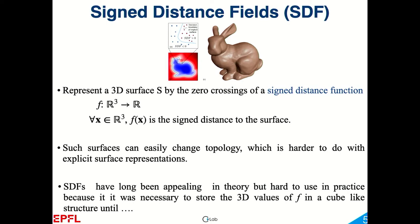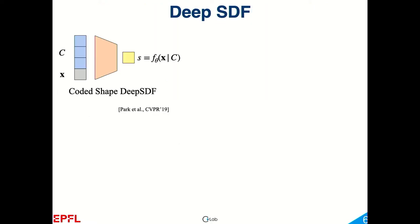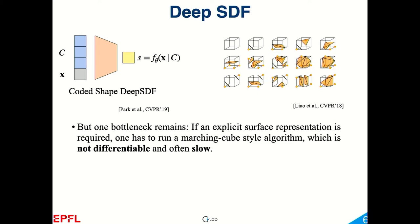That's been known for a while but it was perceived to be not very practical because of this memory storage problem, until a few years ago some bright people came up with the idea that you don't need to represent the cube, you can use a deep net to do that. You have a deep net that takes as input x—a point in 3D space—and a code, a latent vector that parametrizes the surface. You feed this into the network and you get s, the signed distance, as a function of x and c, the value of the code that defines the shape of the surface.